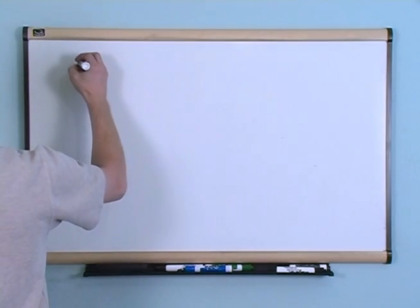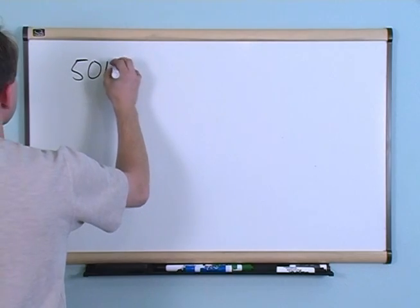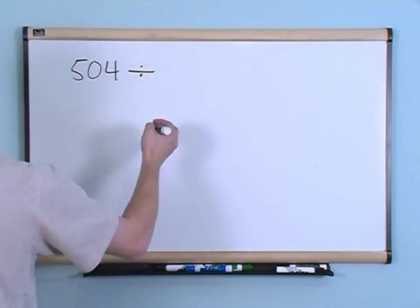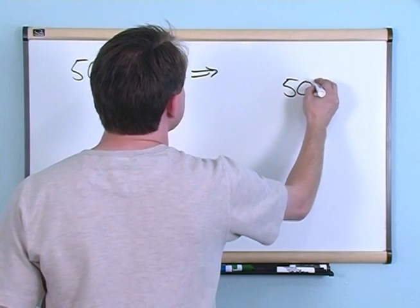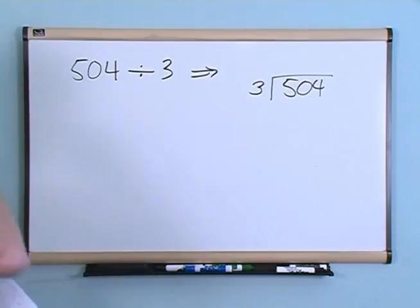Moving on here. Let's say you had 504 divided by 3. You'll have 504 divided by 3.